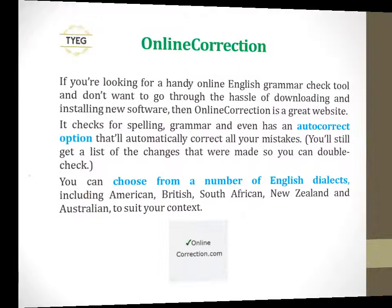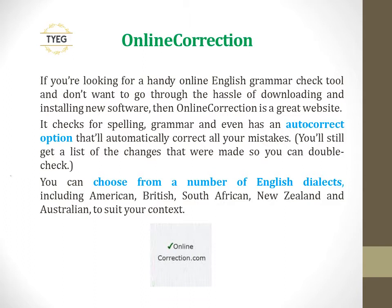If you're looking for a handy online English grammar check tool and don't want to go through the hassle of downloading and installing new software, then Online Correction is a great website. It checks for spelling, grammar, and even has an auto-correct option that'll automatically correct all your mistakes. You'll still get a list of the changes that were made so you can double-check. You can choose from a number of English dialects, including American, British, South African, New Zealand, and Australian, to suit your context.